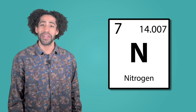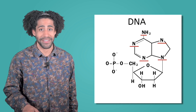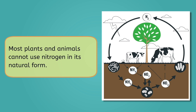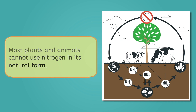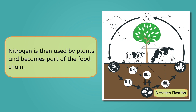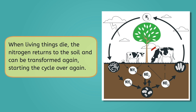Speaking of resources that build living things, this brings us to nitrogen. Nitrogen is an important component in proteins and DNA, which are absolutely necessary for life. The nitrogen cycle is the process by which nitrogen moves through the environment, changing form and supporting life. Most plants and animals cannot use nitrogen in its natural form, so it must be transformed into ammonia or nitrates by special bacteria in the soil in a process called nitrogen fixation. Once the nitrogen is in a form that can be used by plants, it becomes part of the food chain, and when animals eat plants, the nitrogen becomes part of their bodies. When living things die, the nitrogen returns to the soil and can be transformed again, starting the cycle over.